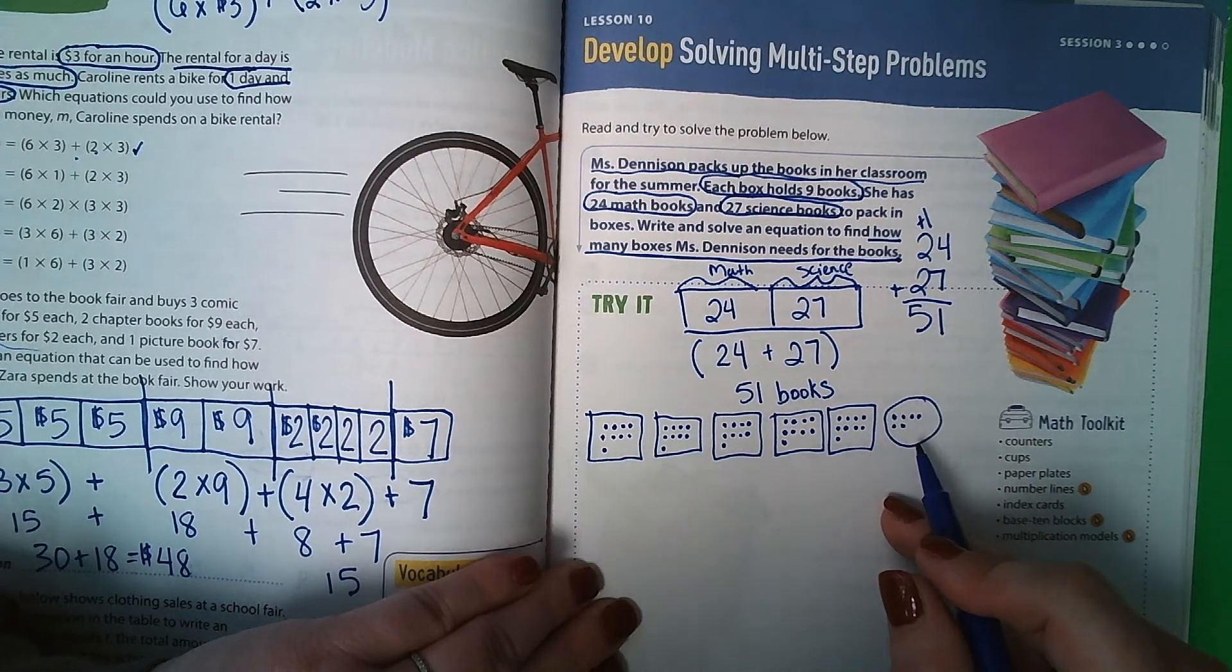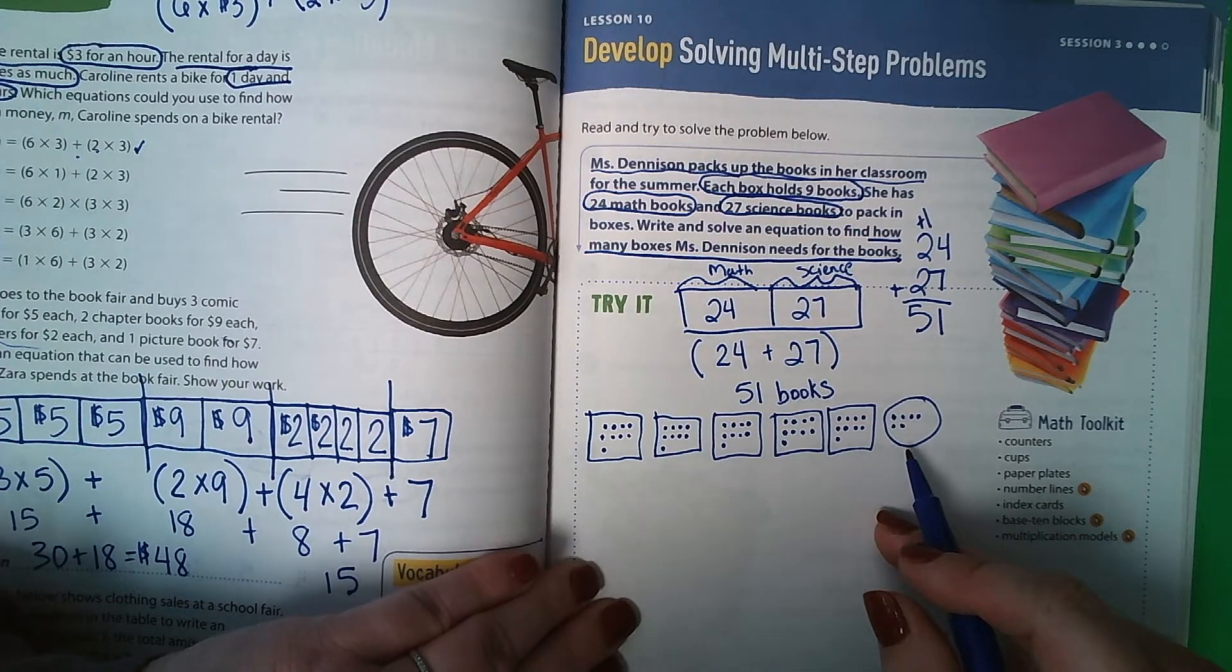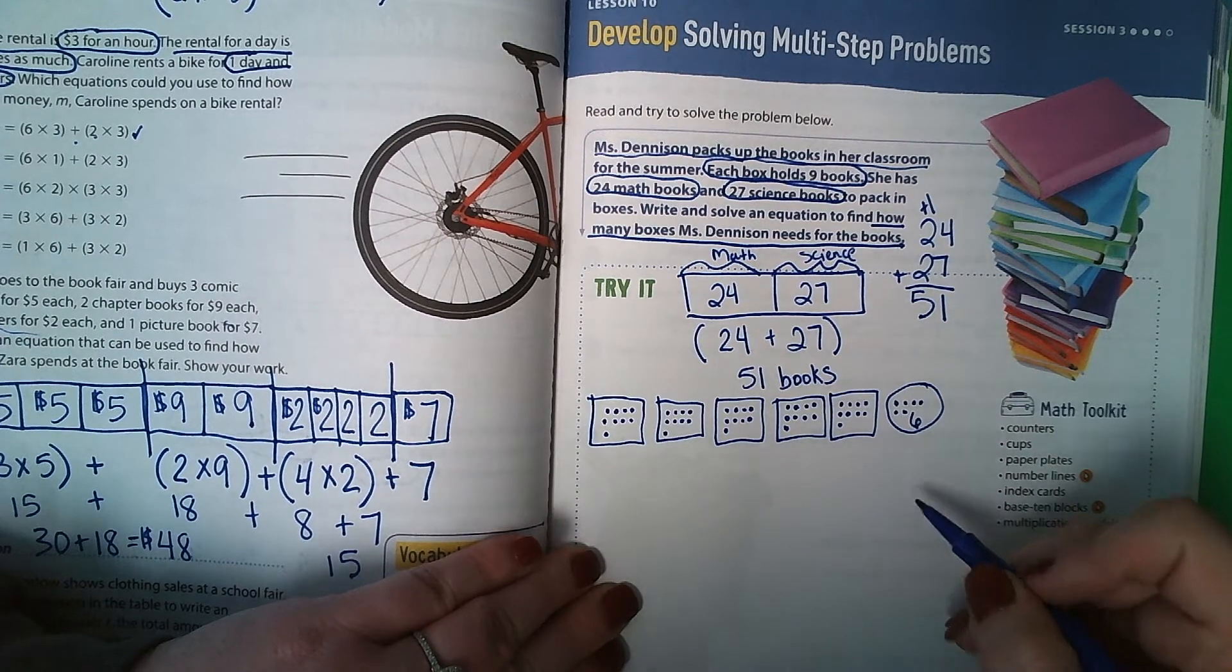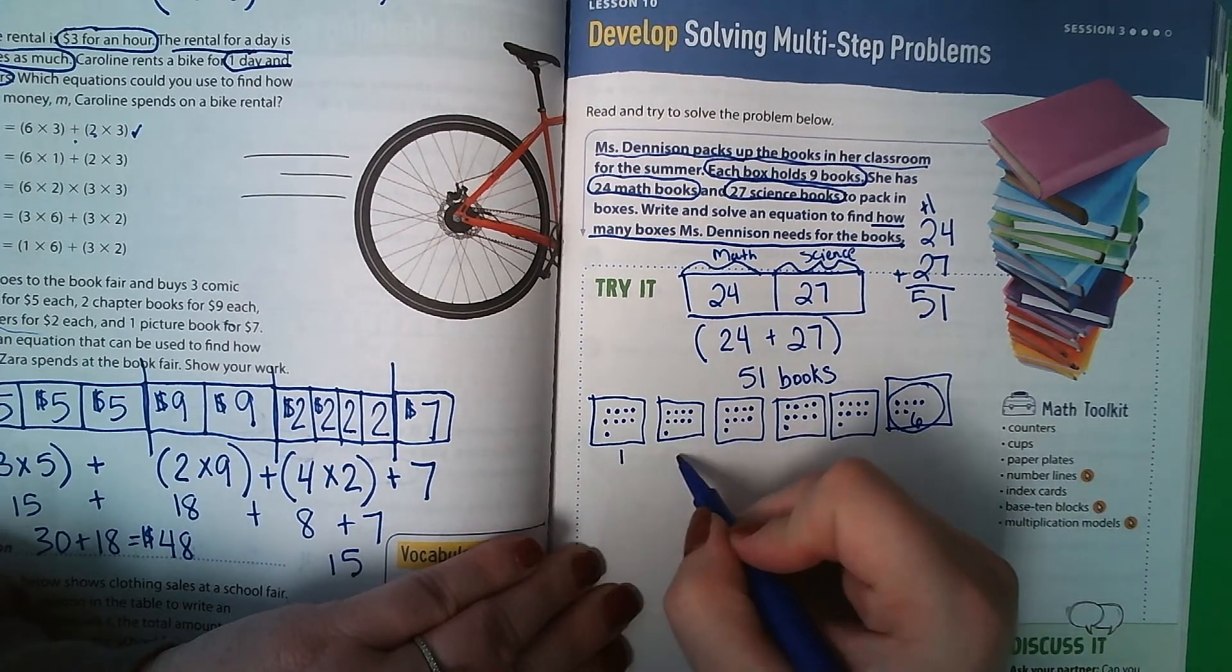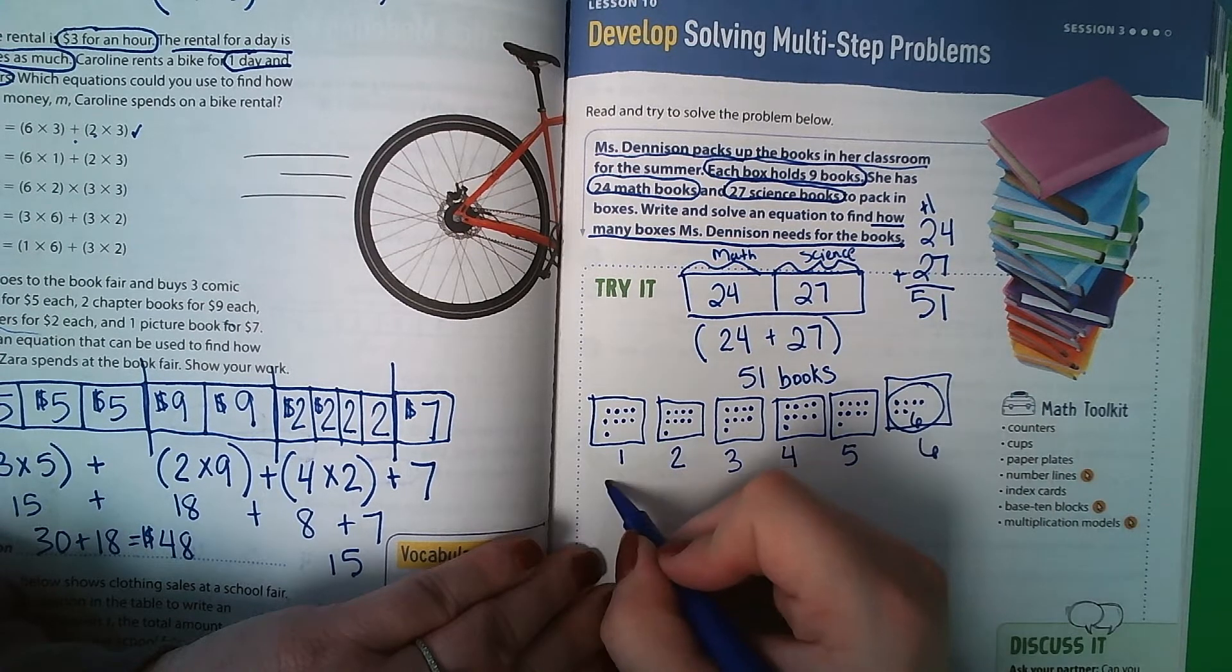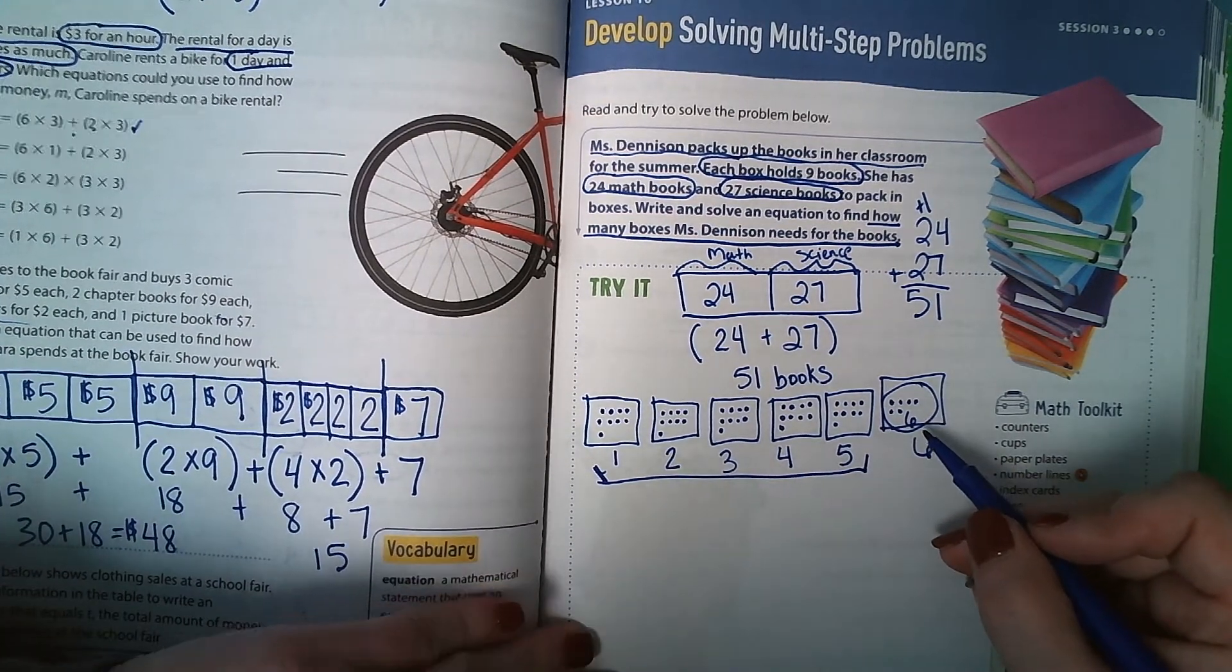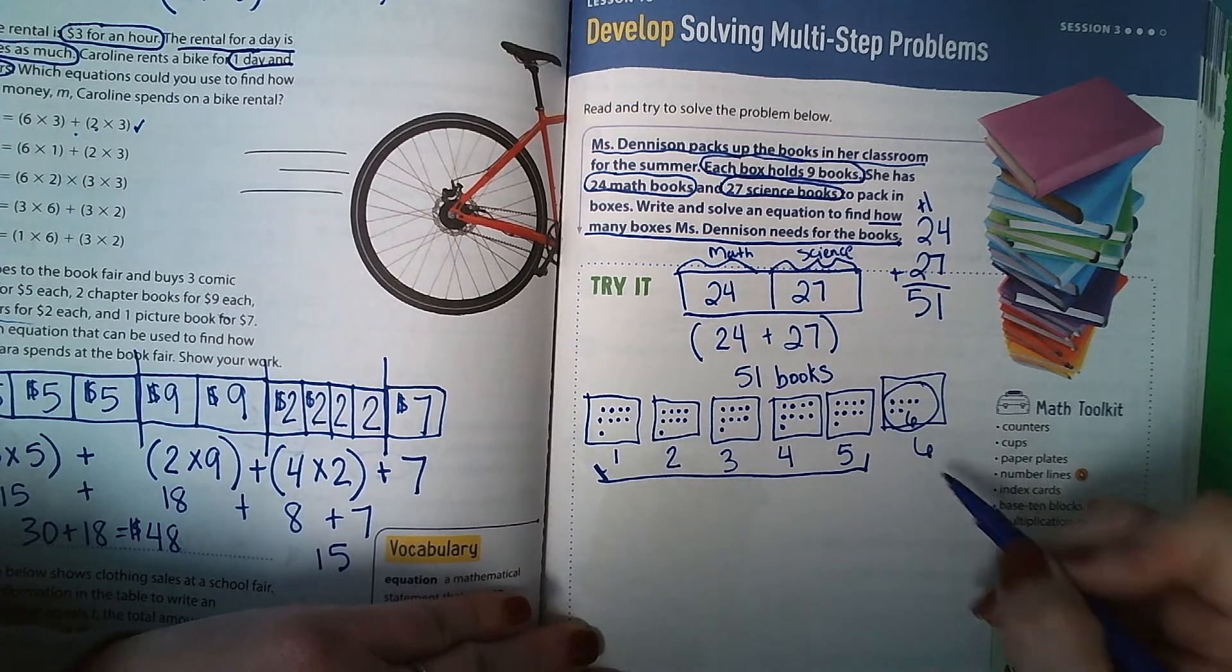So she needs 5 boxes, but then she has a leftover one. Well, those books are going to have to go somewhere. These are the remaining books. Do I just throw them in a bag? Do I throw them to the side? What do I do with those last few books? There's 1, 2, 3, 4, 5, there's 6 of them here. Well, she's probably going to actually need a box for those, too.